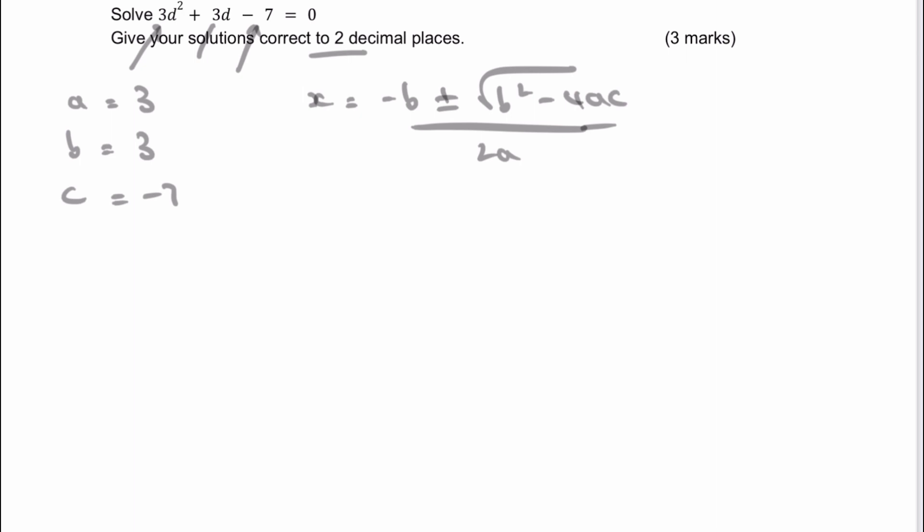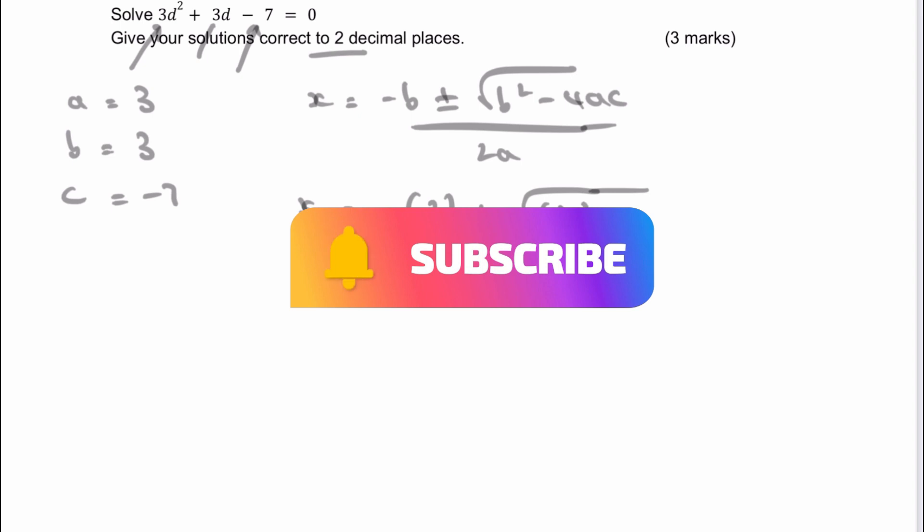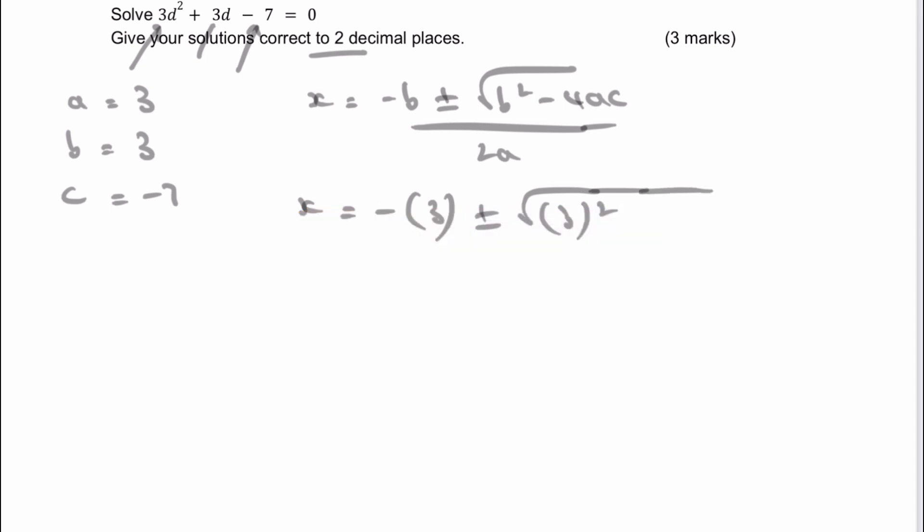And then really it's just a case of taking this information and applying it directly in. Now the way I do it is I tend to use brackets. Now the reason that is is because if the value of b, say, was negative, it just makes it a little bit easier when I'm calculating. Now in this particular case, it's positive for the value of b.